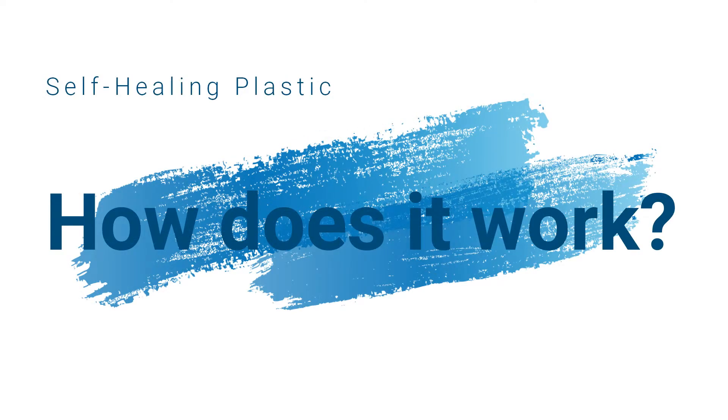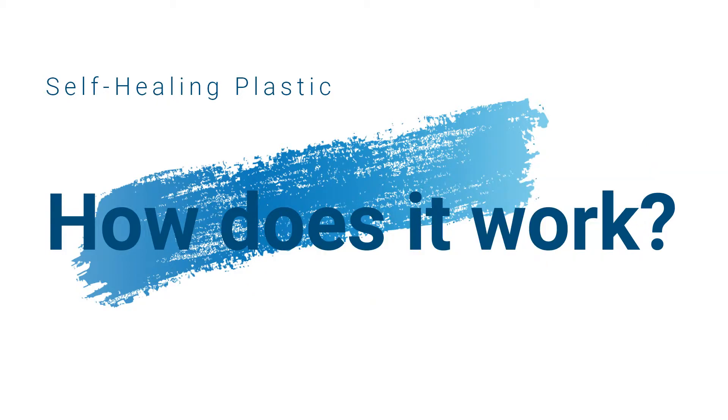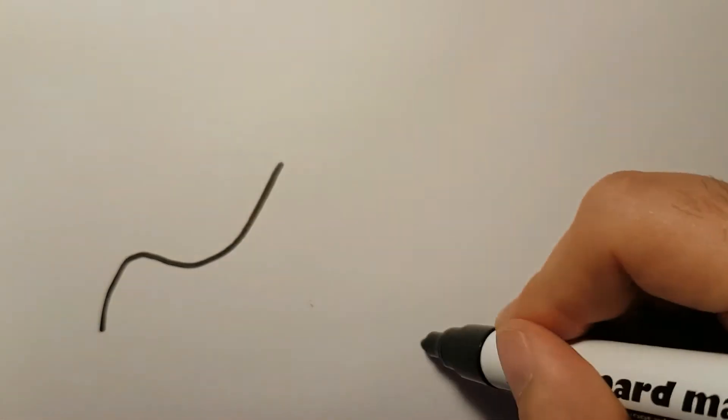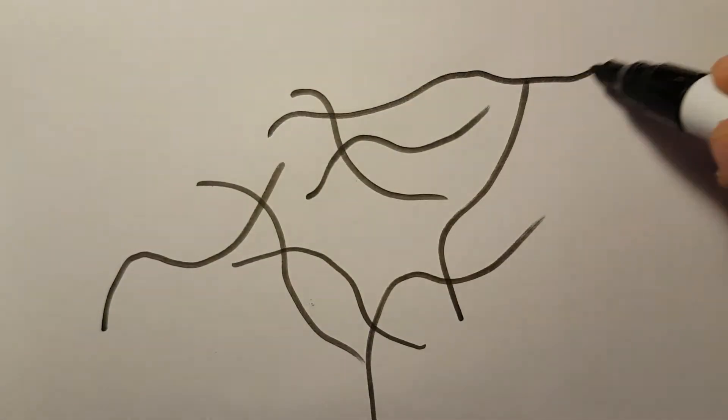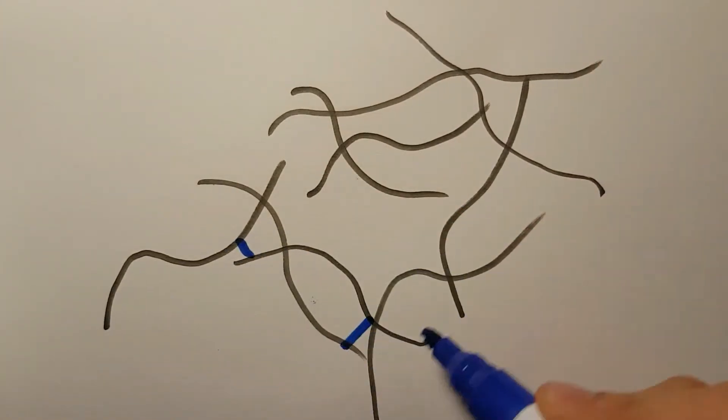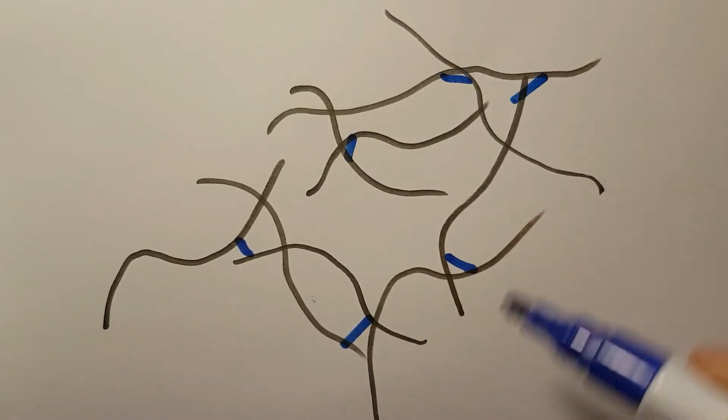So how does this self-healing process work? Plastics consist of polymers. Polymers are molecules consisting of a long chain of millions of atoms. These polymers can be bonded together or cross-linked by smaller molecules called monomers.